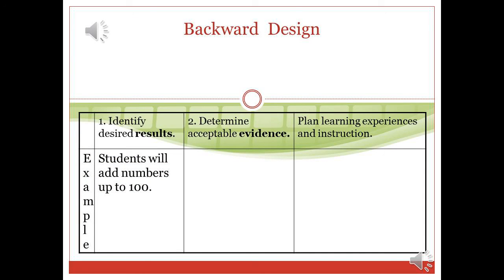Educators should not engage students in activities that do not have a clearly established instructional goal. Every instructional activity should be designed based on the outcome we want to obtain. The first step is formulating the goals. The second step is determining which type of evidence indicates mastery of that goal. For instance, if the objective is adding numbers up to 100, acceptable evidence would be solving problems that require students to add numbers up to 100. Therefore, instructional activities should focus on teaching students how to solve problems that require addition.